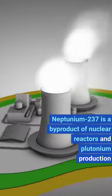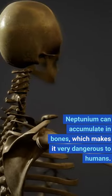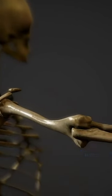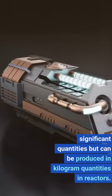Neptunium-237 is a by-product of nuclear reactors and plutonium production. Neptunium can accumulate in bones, which makes it very dangerous to humans. It's not found naturally on Earth in significant quantities but can be produced in kilogram quantities in reactors.